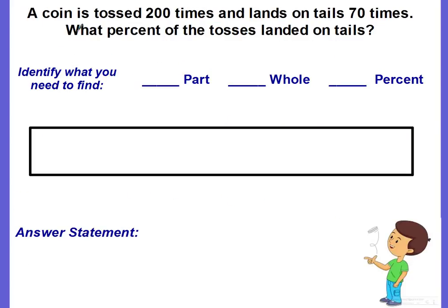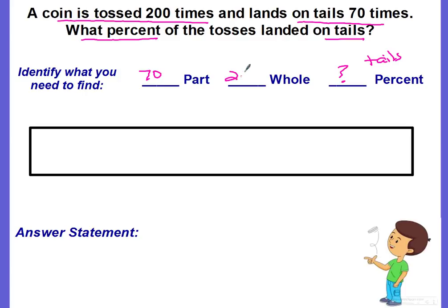Next example: a coin is tossed 200 times and lands on tails 70 times. What percent of the tosses landed on tails? The percent we're looking for is that of tails. The whole is 200 tosses and the part is 70 — the number of times it landed on tails. Do the part and the percent represent the same thing? Yes, they both represent tails.